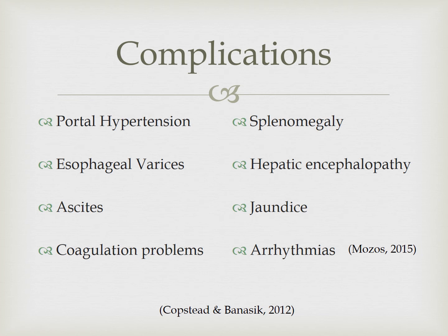Portal hypertension results from increased resistance or obstruction of blood flow through the portal vein. The increased portal venous pressure causes collateral circulation to divert portal blood flow from areas of high pressure within the liver to areas of low pressure outside the liver, such as the veins of the esophagus, spleen, intestines, and stomach. The thin-walled vessels of the esophagus and stomach become distended and form varices that are at risk of rupturing.